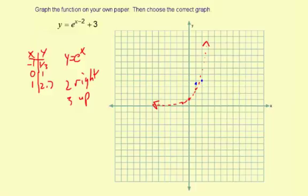1, 2.7, 2 to the right, and then 1, 2, 3 up, so about right there. And the asymptote goes 3 up also.